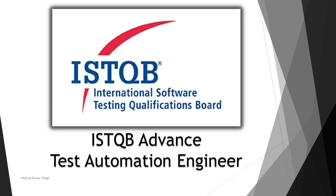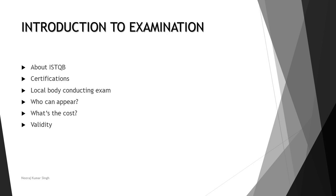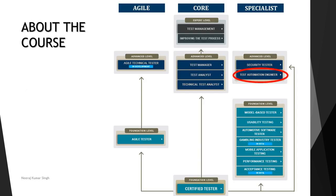This is an advanced level certification for test automation engineers across the globe, with a standard syllabus. ISTQB — the International Software Testing Qualification Board — has several certifications. Looking at the diagram on screen, you can see the various certifications conducted by ISTQB. The Test Automation Engineer is on the right side, considered an advanced level certification you can pursue soon after your foundation level.